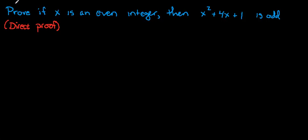Hello, in this video we're going to examine a proof. The claim says: if x is an even integer, then x squared plus 4x plus 1 is odd, and we're going to use a direct proof here.